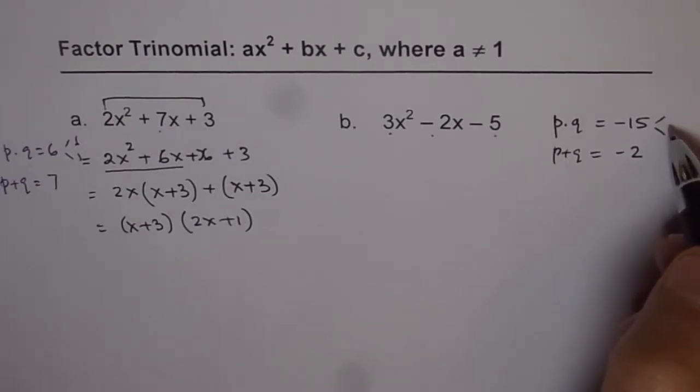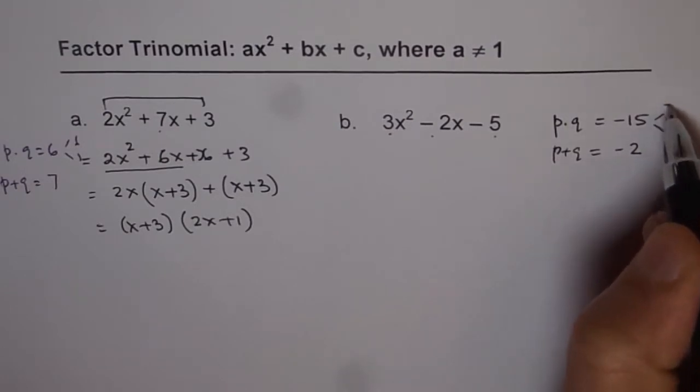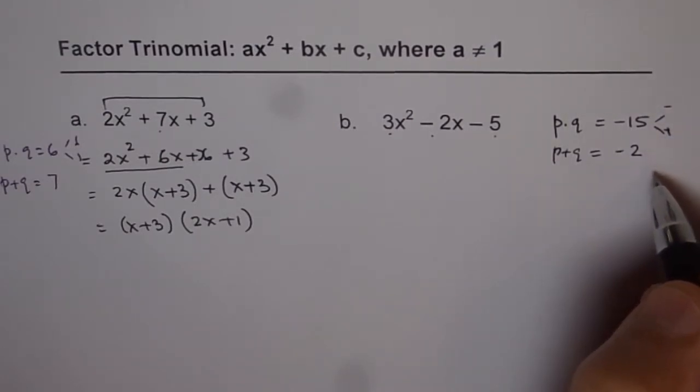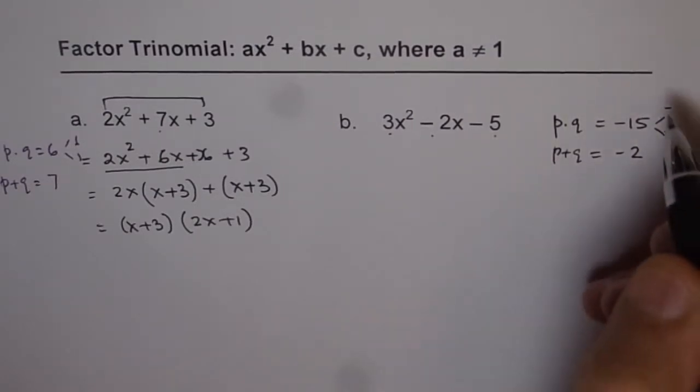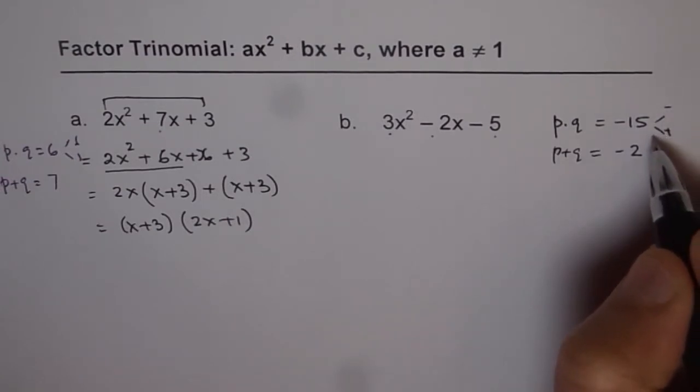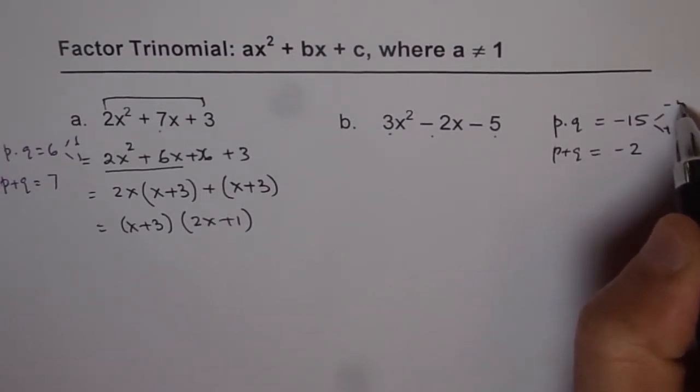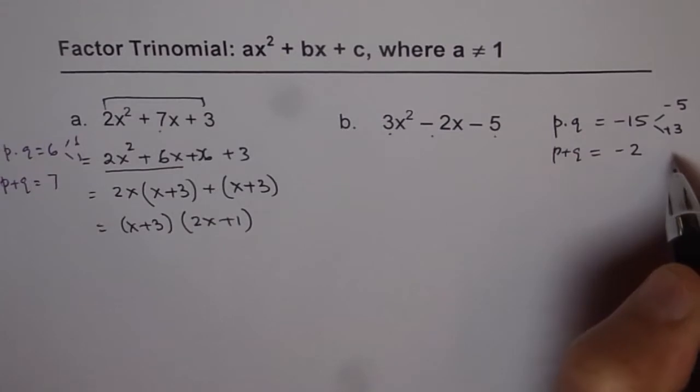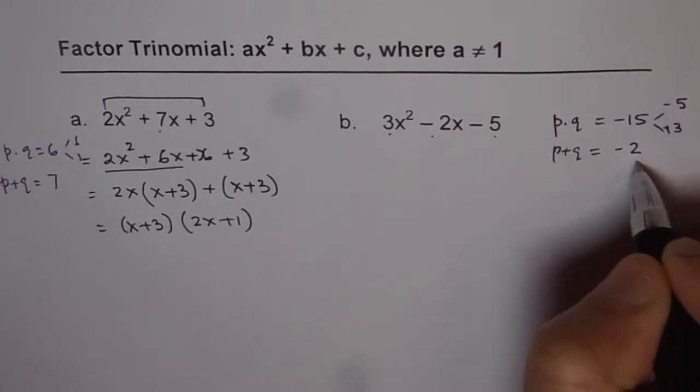Now, when we are trying to find -15 as a product, the two numbers should have different signs. The bigger one should have negative sign. So we have two different signs here. The numbers are 5 and 3. 5 times 3 is 15. So, 5 should be negative and 3 is positive. When you add them, you get -2.